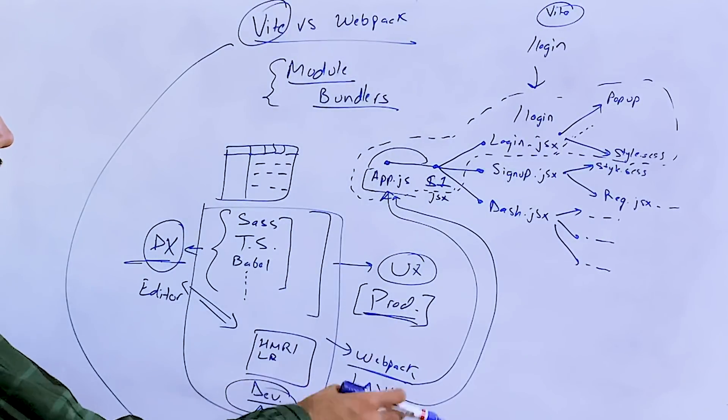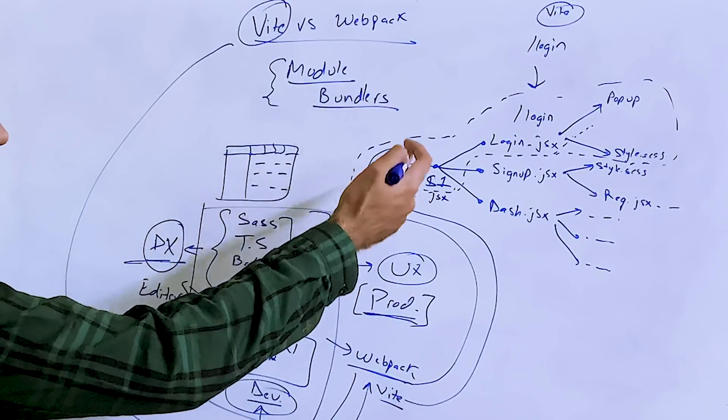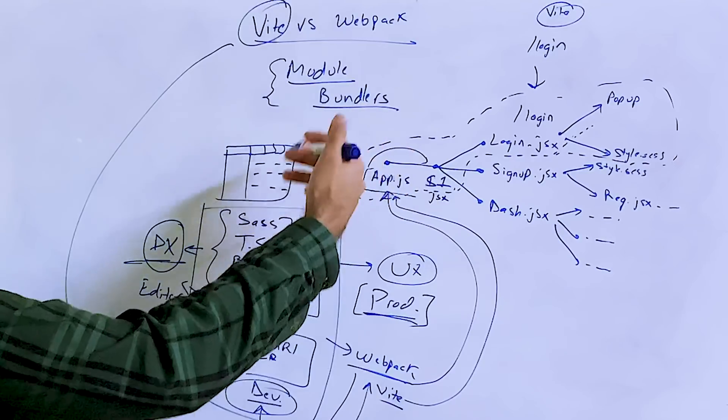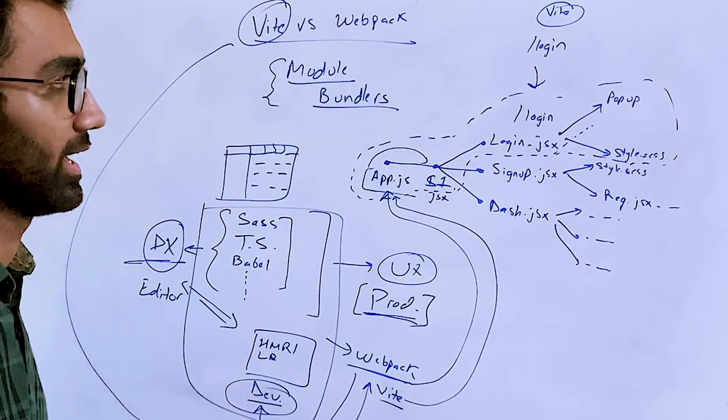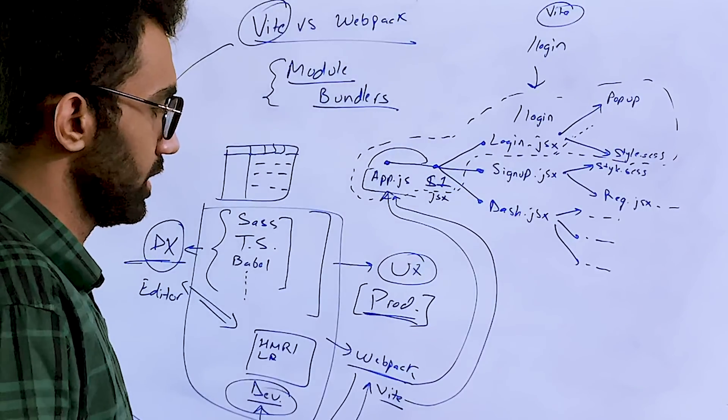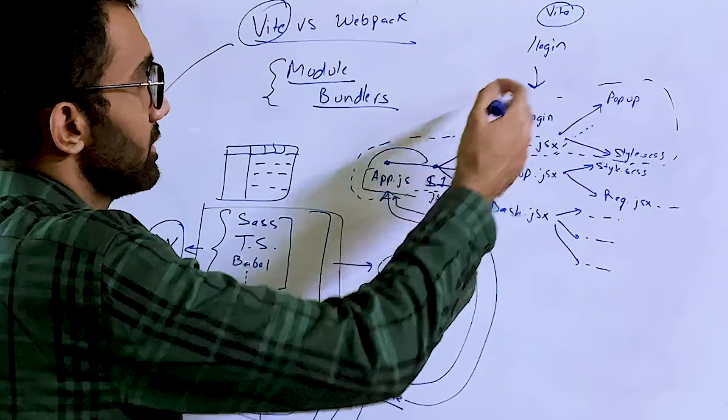Of course, Vite does a lot more optimizations on top of this. It will pre-compile your bundles and dependencies which are already being used, for example React and ReactDOM. It will just pre-compile them and inject them every single time instead of going through them all the time.